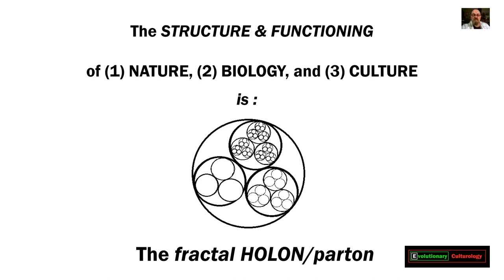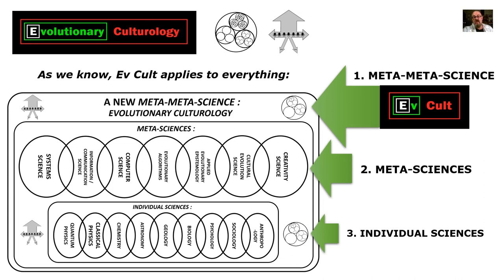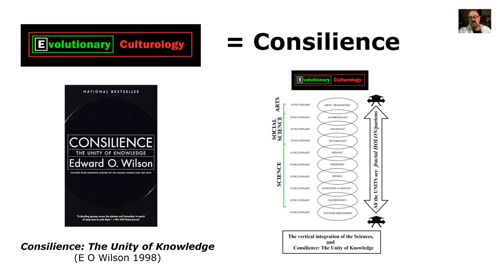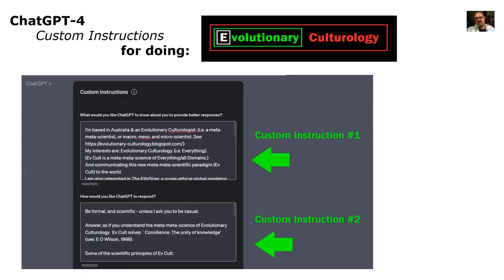Ev Cult applies to everything — worth mentioning again. Not just the individual sciences, but the meta-sciences as well. That's how Ev Cult solves consilience, the unity of knowledge, in both senses of the term. Don't forget there are those ChatGPT-4 custom instructions for doing Ev Cult. Put those into your ChatGPT-4, and every time you ask it a question it'll give you the Ev Cult explanation as well as the basic answer. You also get how the three laws apply, giving a nice scientific understanding of the world.